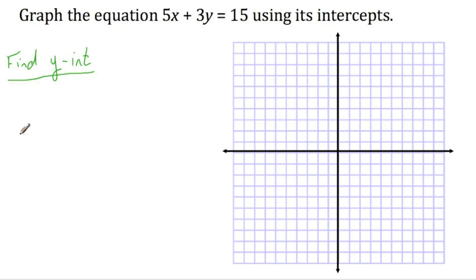In order to find the y-intercept, you have to know what goes on at the y-intercept. The y-intercept is where the line is going to touch this y-axis. It's going to give you the y-coordinate of where it touches the y-axis.